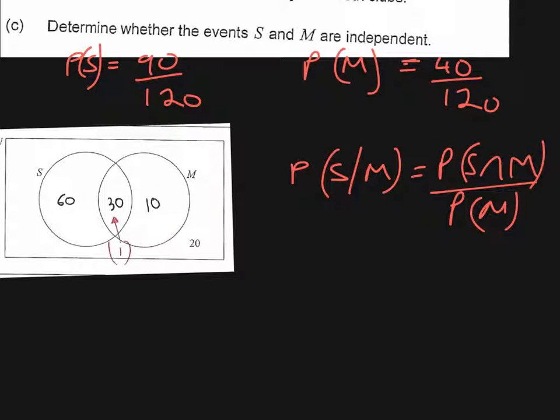So this is a generic formula adapted from the formula booklet. So we've got here the probability that S happens given M has happened equals the probability of S and M happening together divided by the probability of M happening. Now why this is important is that if they are independent, it doesn't matter whether or not M has happened. So we could just rewrite this as the probability of S happened.